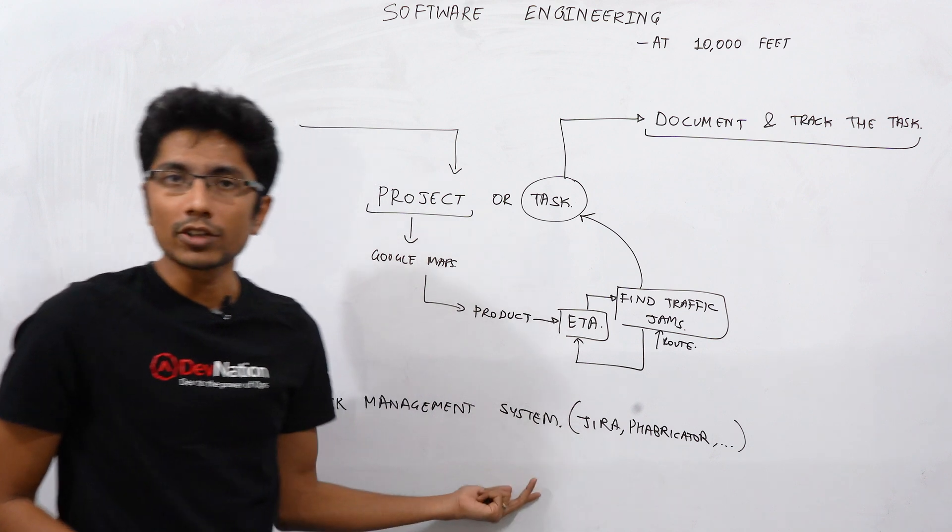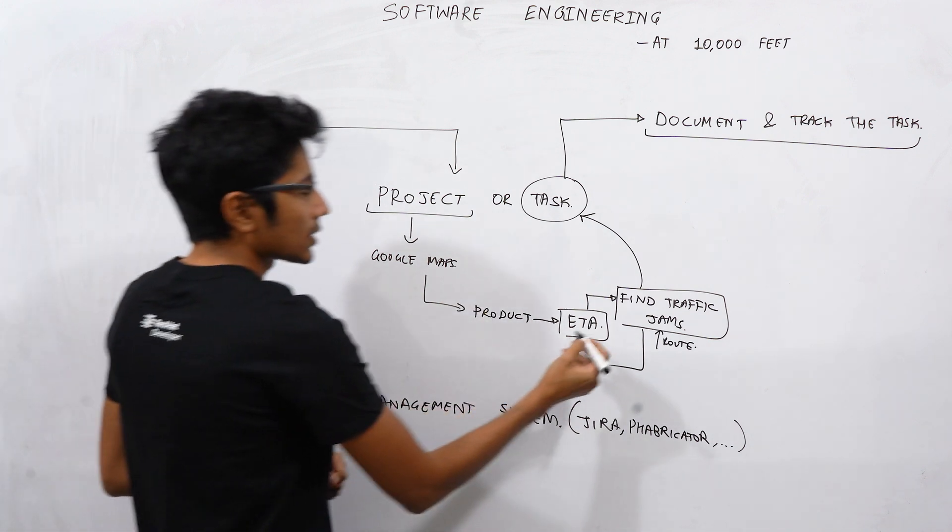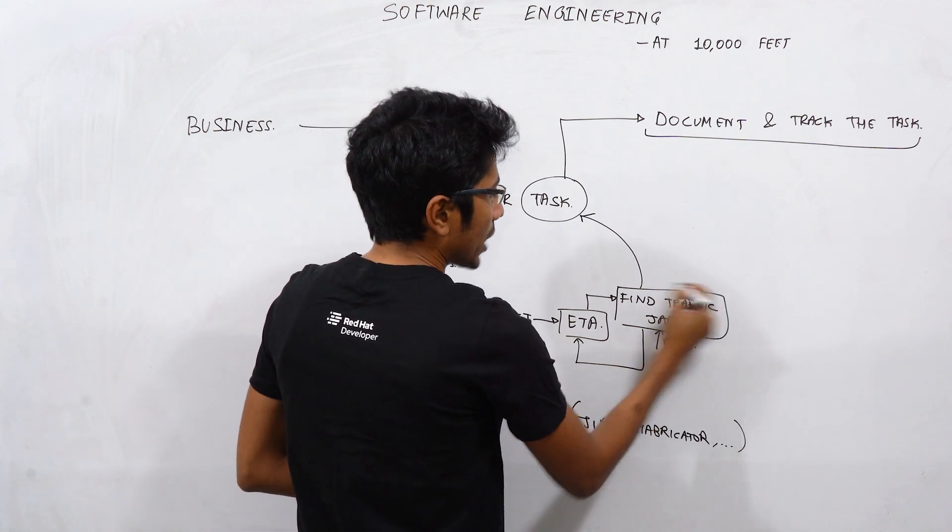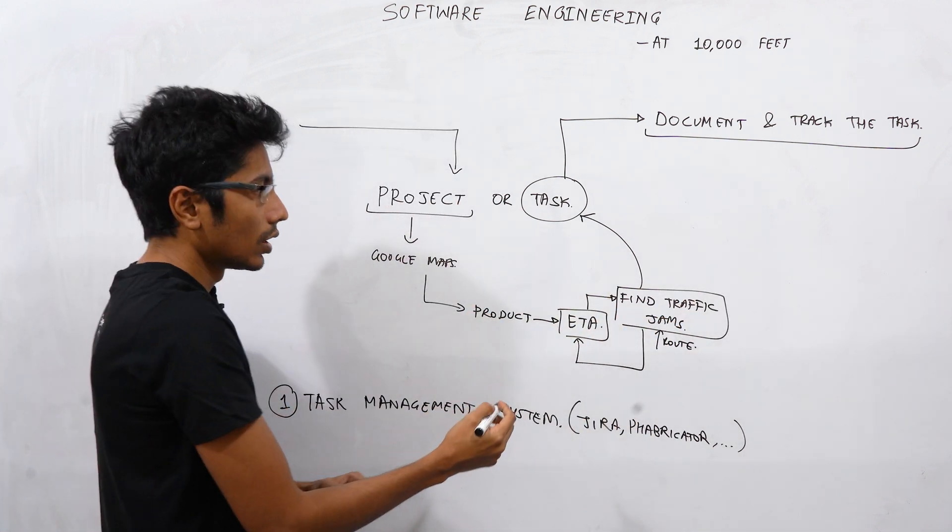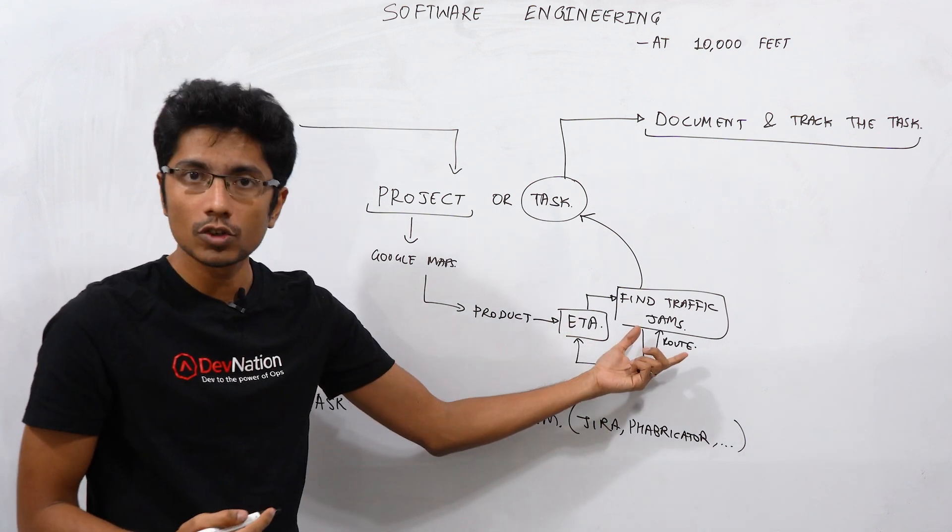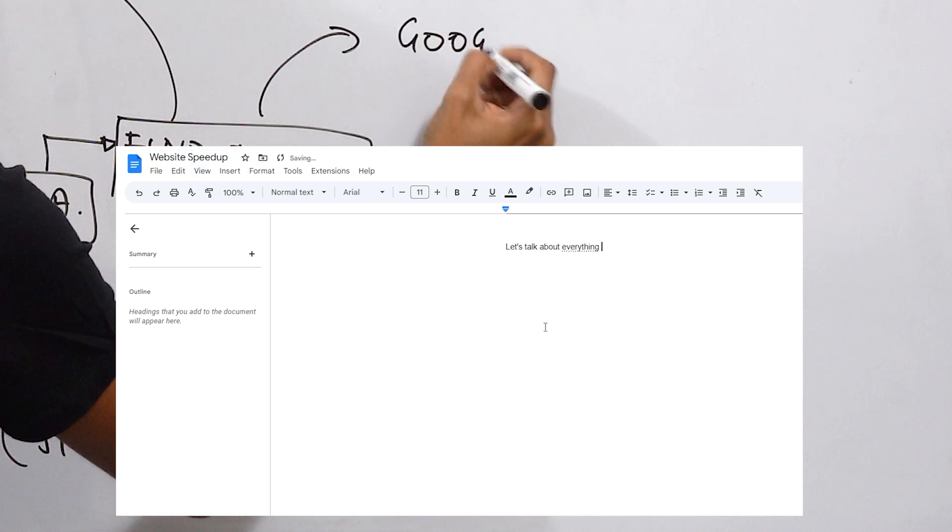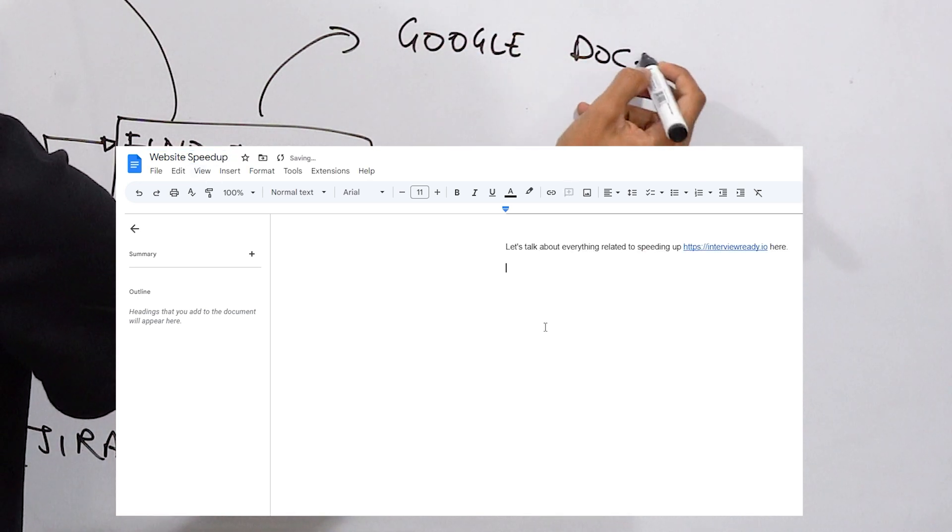What does Jira or what do these tools actually give you? They give you a way in which you can note down one of these tasks that you need to find traffic jams in a given route. How do you remember this tomorrow? How do you discuss this tomorrow? So you can think of setting up a Google Doc and having everybody discuss this idea or this task over there.